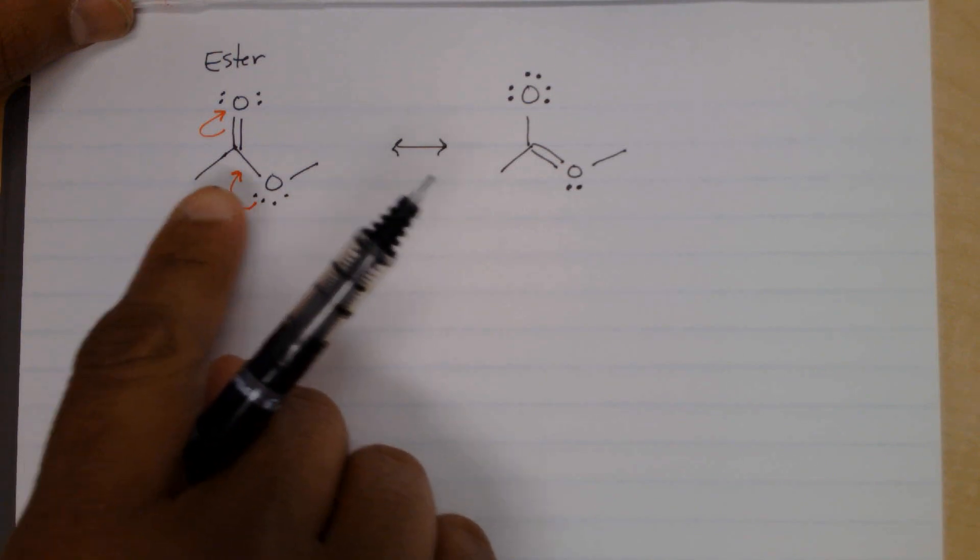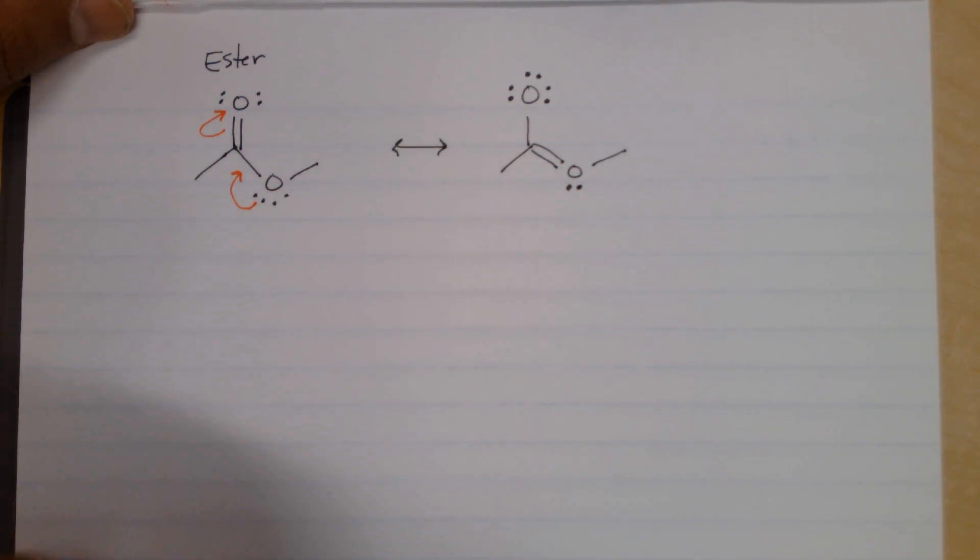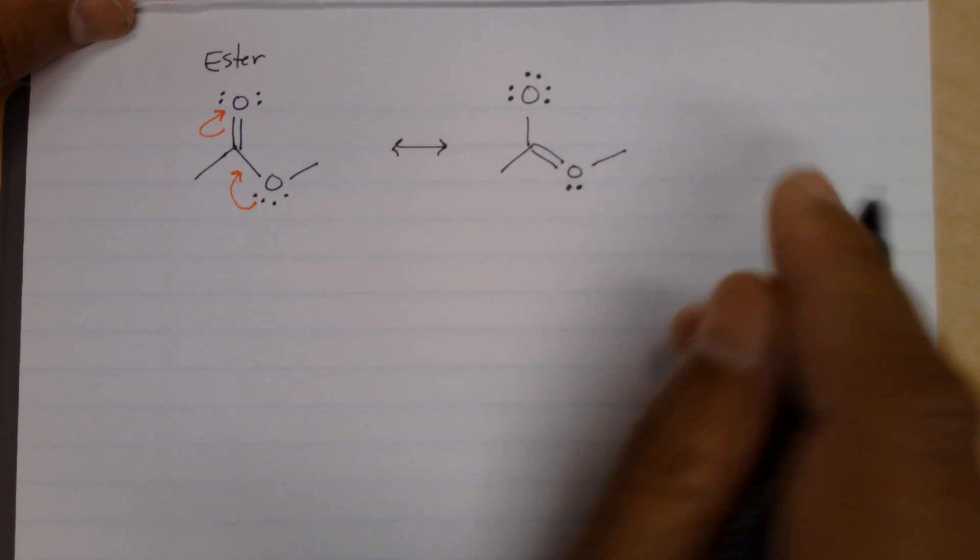But when the electrons move, now we're not breaking any rules, so this is a valid Lewis structure. This is a resonance structure. However, we do notice that we have formal charges now.